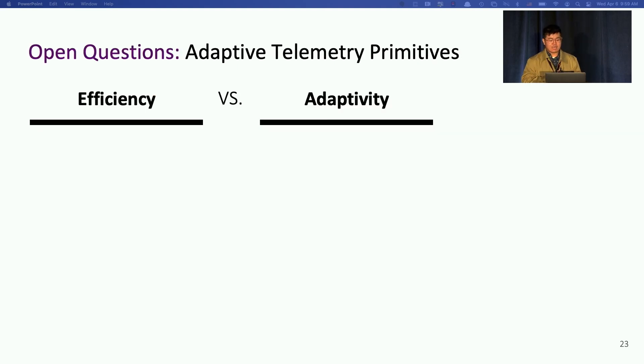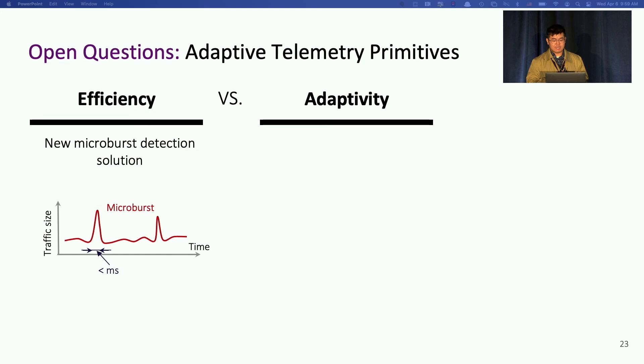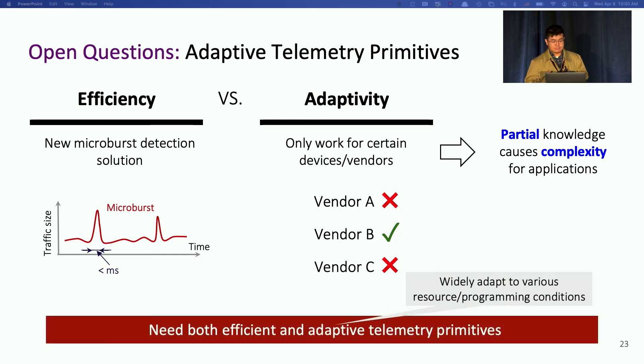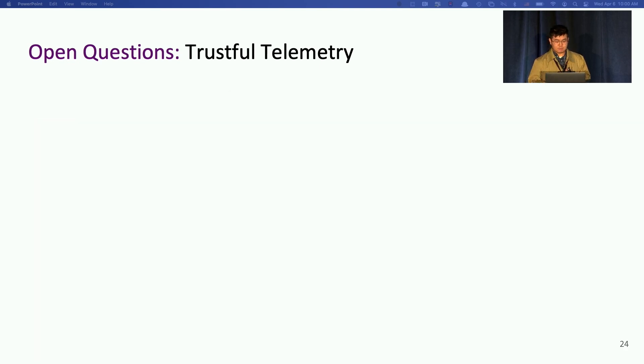The first question we have is tension between efficiency and adaptivity of telemetry primitives. For example, in Meta, we developed a new microburst detection solution, but it can only work on certain devices because of resource or programming constraints. The application cannot assume that it can capture all microbursts in the network, but only microbursts on certain devices. So this partial knowledge really makes application logic really complex and hard to give informative insights. So in other words, we would need efficient telemetry primitives that can adapt to different vendors or devices.